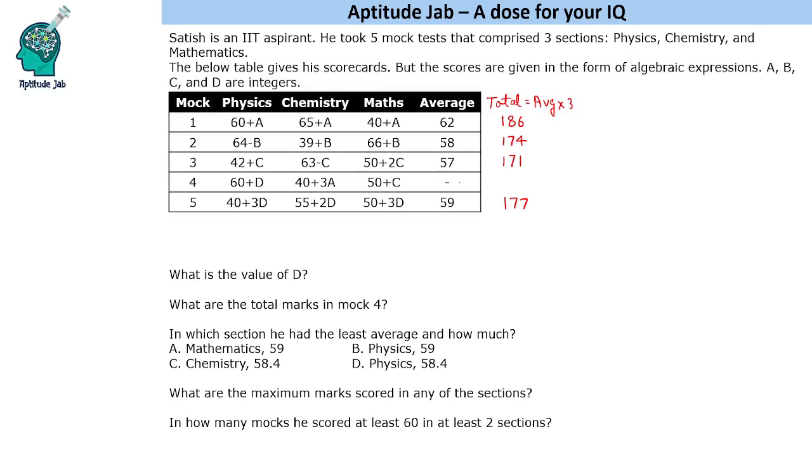Least average, you need all four values. Maximum marks, you need all four values and for this also, you need all four values. Anyway, it is an easy set just to demonstrate that if you are in a scarcity of time, you should attempt one or two questions only, which are the easiest possible. For example, in this case, this is the easiest possible question by using this part.